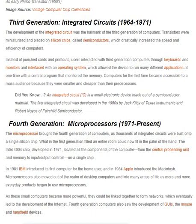Computers for the first time became accessible to a mass audience because they were smaller and cheaper than their predecessors. Did you know? An integrated circuit is a small electronic device made of semiconductor material. The first integrated circuit was developed in the 1950s by Jack Kilby of Texas Instruments and Robert Noyce of Fairchild Semiconductor.